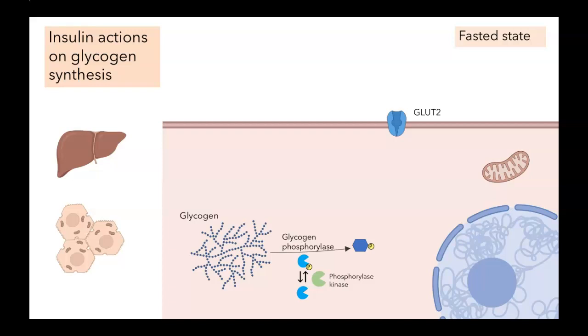Another thing that happens in the fasted state is that there's a transcription factor, FOXO1, and that's involved in turning on genes that are involved in gluconeogenesis. So again, if we're hungry, we'll be expressing the genes we need in order to make glucose from non-sugar sources, such as free fatty acids or proteins.